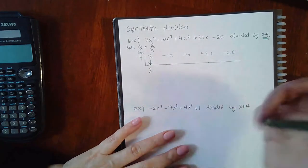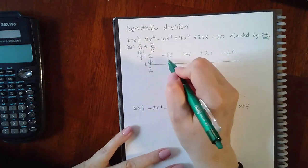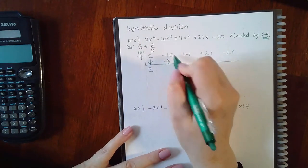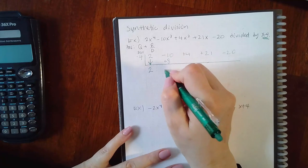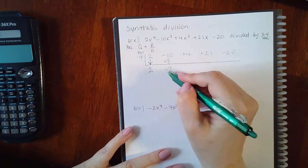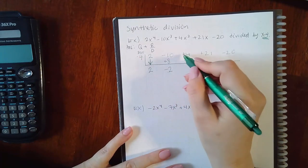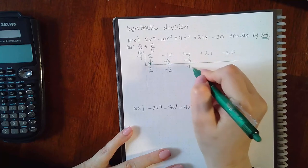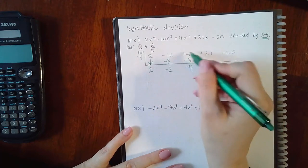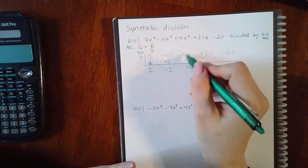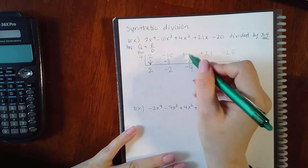Four times 2 is positive 8. Negative 10 plus 8 is negative 2. Four times negative 2 is negative 8. Positive 4 and negative 8 is negative 4. I'm combining as far as adding and subtracting depending on the signs. I am not multiplying here.